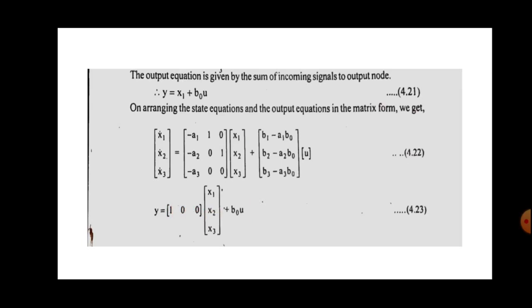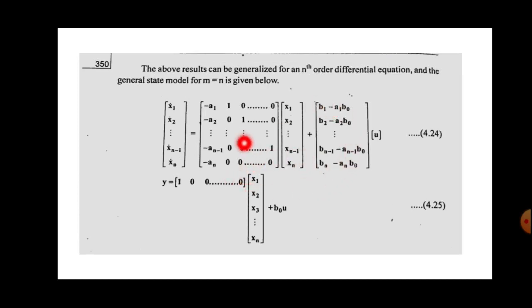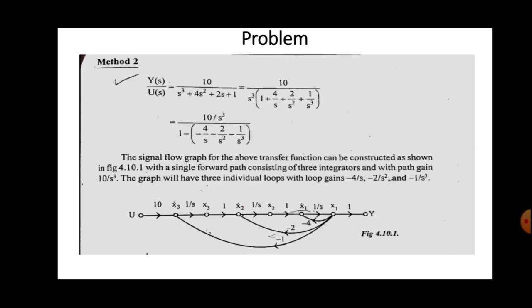Method 2 is a little more complex compared to method 1. You may be asked to solve problems using either method. Now let us solve a university question: Y(s)/U(s) = 10 / (s³ + 4s² + 2s + 1).